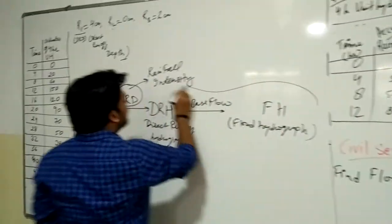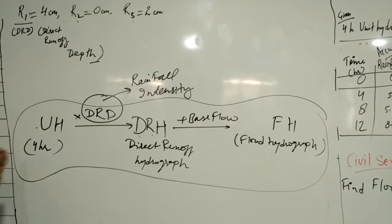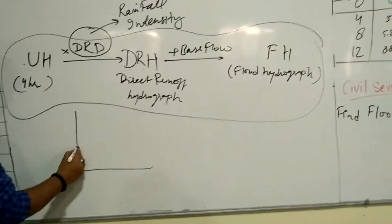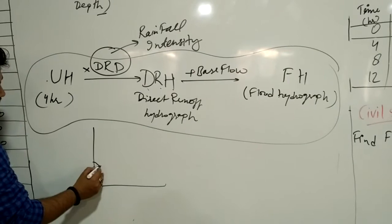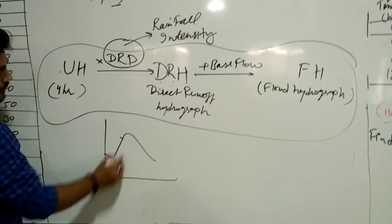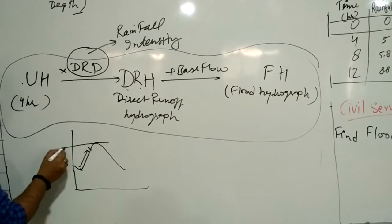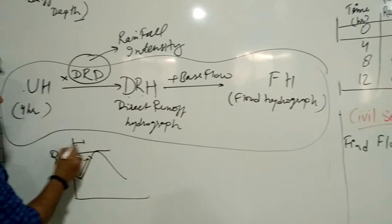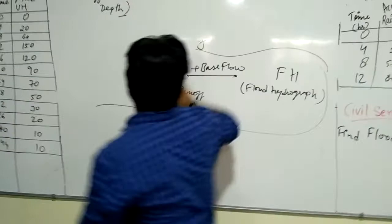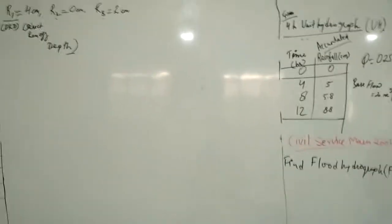This is the important approach for solving any unit hydrograph problem to form a flood hydrograph. As rainfall occurs, infiltration losses are present first. Then rainfall intensity increases to reach a peak discharge QP at a certain time. After the end of rainfall, the hydrograph recedes. We have obtained the ordinates of the DRH and then multiply these ordinates by the unit hydrograph ordinates.